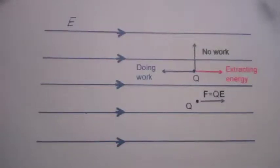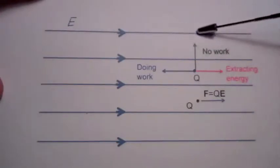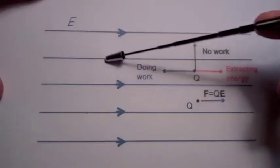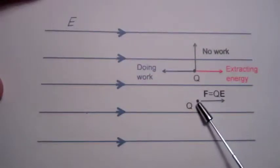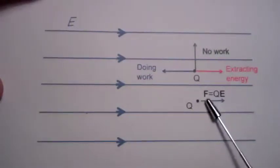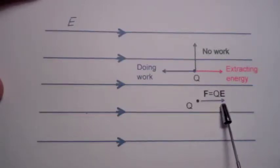I am going to discuss the concept of energy and potential in an electric field. Here we have pictured an electric field pointing to the right. We know that if we put a charge Q in an electric field, it will experience a force given by Q times the electric field, and this arrow here indicates that force pointing to the right.